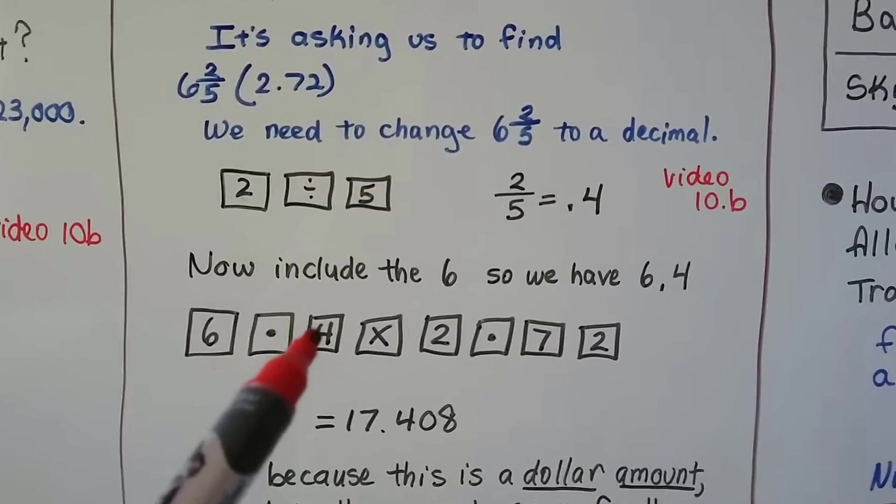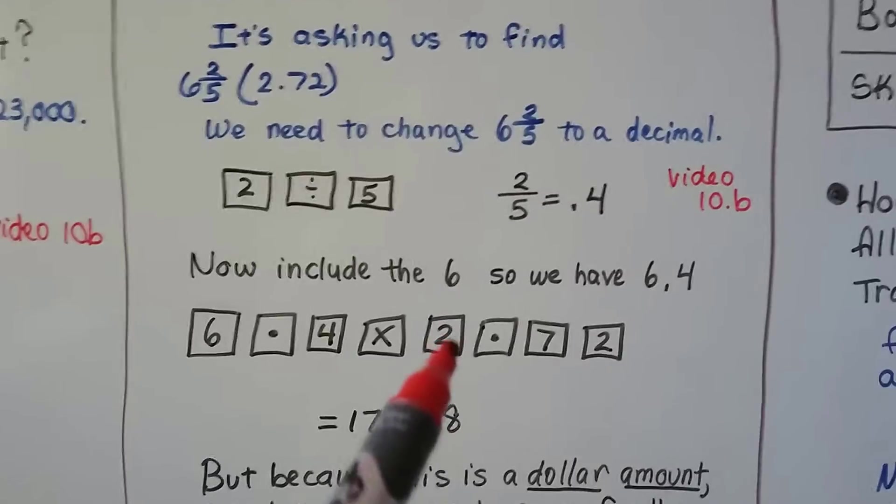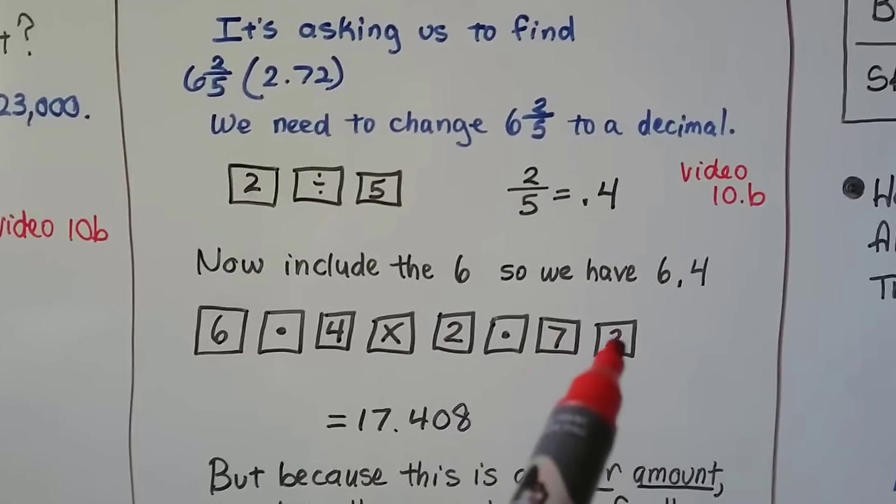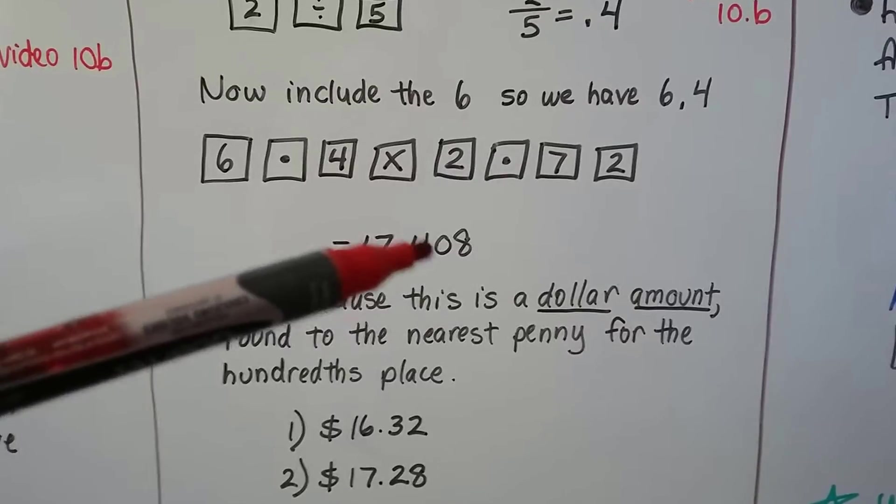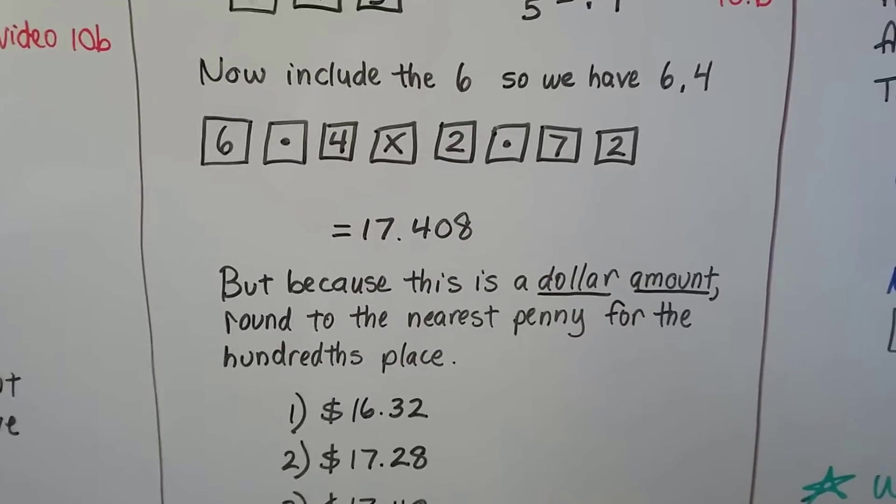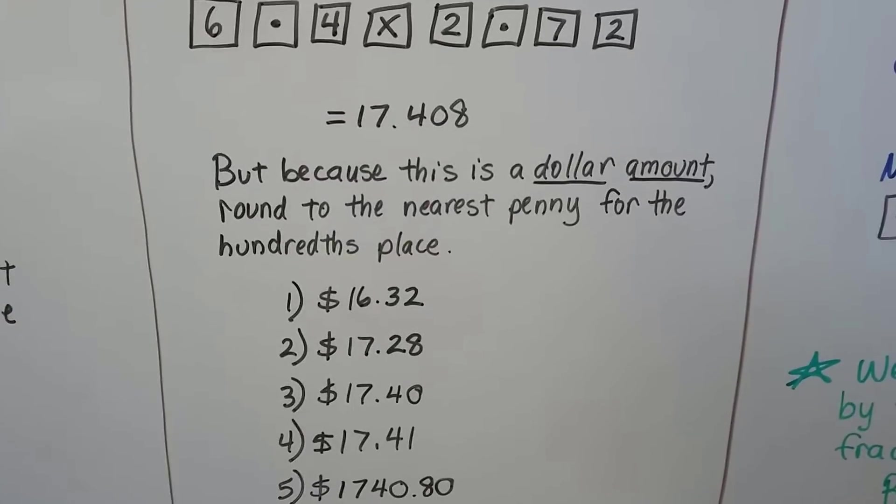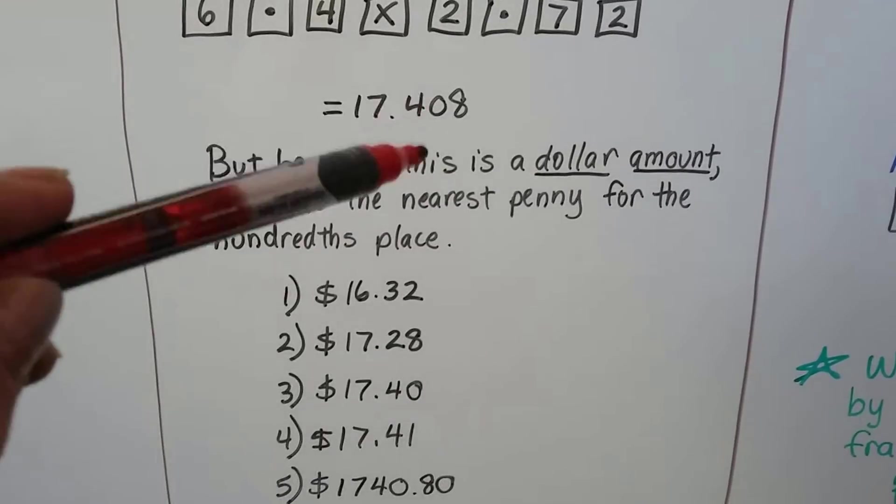Now, we can do six decimal point four multiplication sign two decimal point seven two and it's going to give us 17.408. Now, because this is a dollar amount, we need to round it to the nearest penny for the hundredths place, that zero.